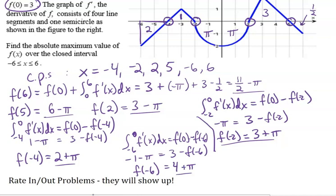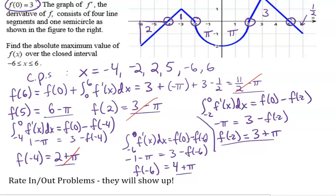For the absolute max value, we compare all our candidate values: 6 minus π, 11 halves minus π, 3 minus π, 3 plus π, 2 plus π, and 4 plus π. Among those with minus π, 6 minus π is the largest. Among those with plus π, 4 plus π is the largest. Comparing 6 minus π, which is about 2 point something, versus 4 plus π, which is about 7 point something — 4 plus π wins. The maximum value is 4 plus π.